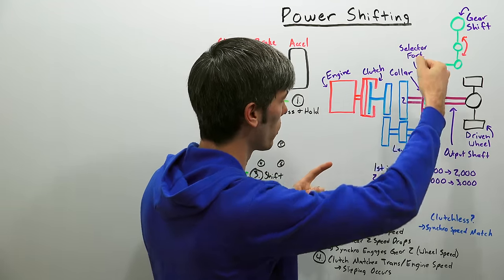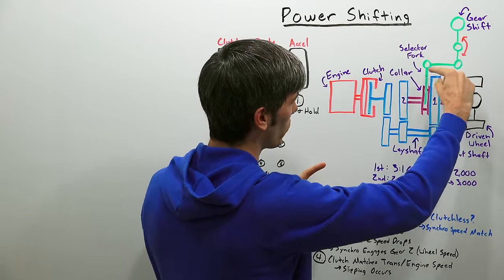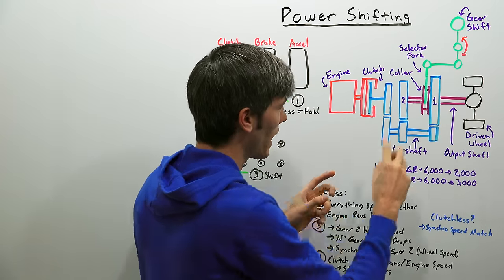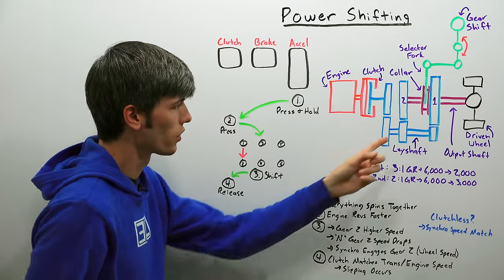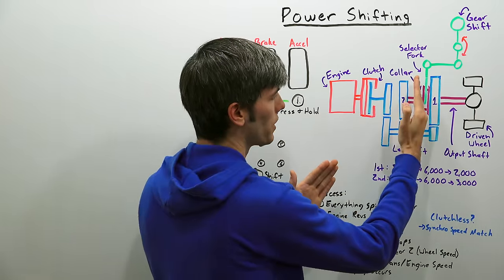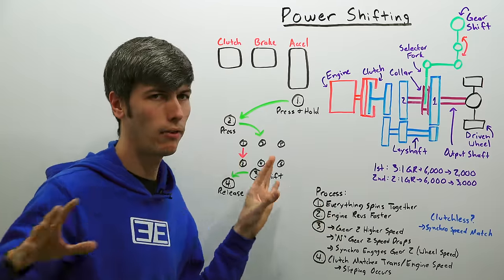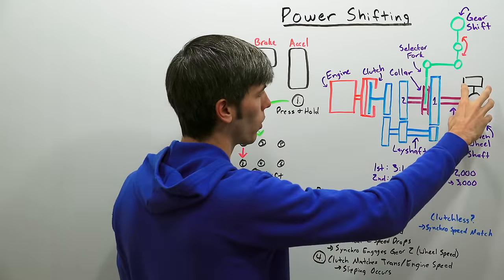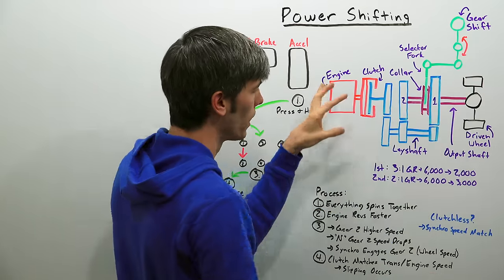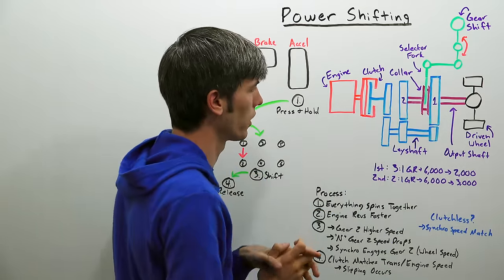So we've moved it from this first gear position using our selector fork, we pull that back, that causes this to rotate forcing this forward, we're now in the neutral position. So once this gear selector collar is in the neutral position now everything is rotating at different speeds, so our wheel speed does not influence the transmission and our engine speed does not influence the transmission.